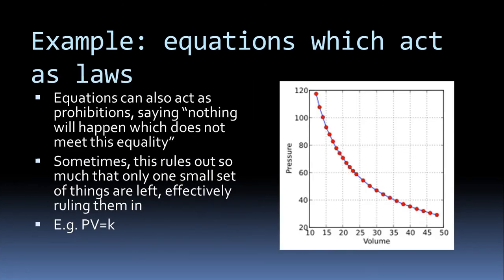Equations can also act as laws. The way I propose to read them is: nothing will happen which does not meet this equality — ruling out anything that doesn't follow this curve. Boyle's law is doing both the law job and the model job at the same time: it's a simple deterministic equation, so there's only one set of things that are possible, meaning it both rules out (nothing not on this curve) and rules in (anything on this curve is possible). We probably built our conception of laws on simple linear laws like this.